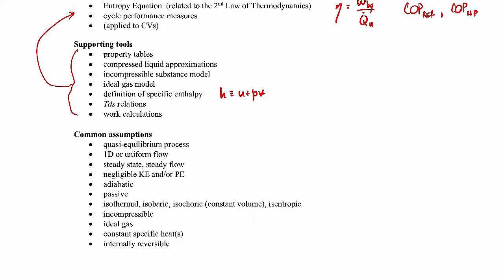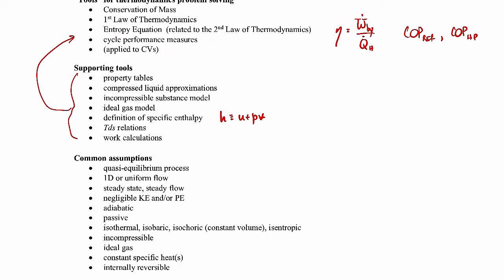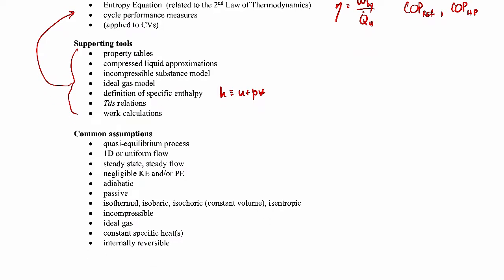So in most of our, essentially all of our thermal problems, we make the quasi-equilibrium process assumption. Just meaning that all of our processes are basically in a state of equilibrium at every point in the process. That just means that our processes are occurring slowly enough that we don't have any significant imbalances within the system. So for example, like if I was changing the pressure in a system, I would be changing the pressure slowly enough so that the pressure everywhere inside the system is uniform.